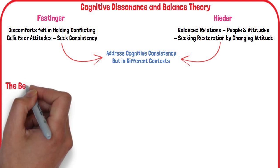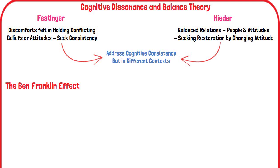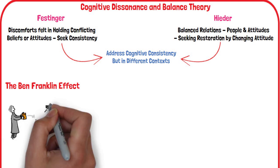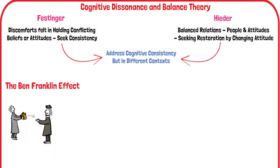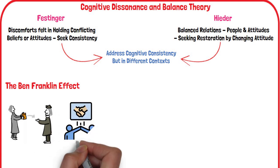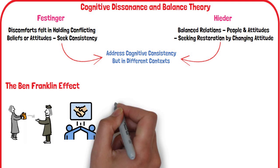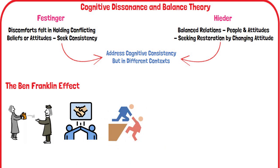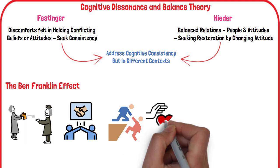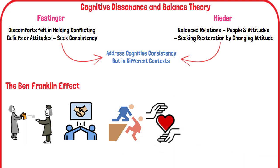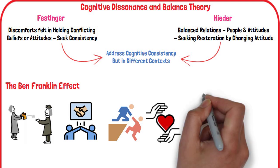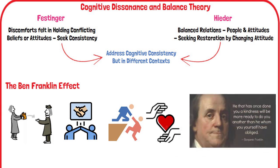Decades before the theory of cognitive dissonance was coined, Benjamin Franklin, one of the founding fathers of the United States, used this phenomenon to turn foes into friends. In one instance, he asked for a favor from a person who didn't like him, and after a few times, the animosity between the two decreased, and they later became good friends. People come to like the person to whom they have done a favor more than those who help them. When someone doesn't like us but is forced to do us a favor, they invest time, energy, or resources in us. This can lead to cognitive dissonance, and to reduce this dissonance, the giver either begins to like us or denies the favor. Most people choose the first option, creating the Benjamin Franklin effect.